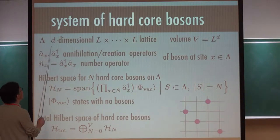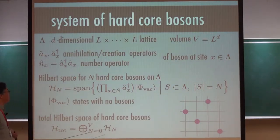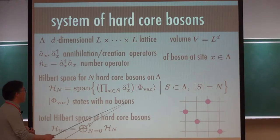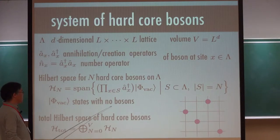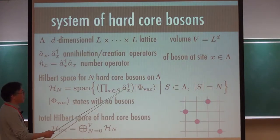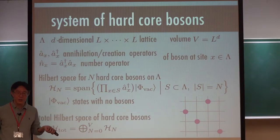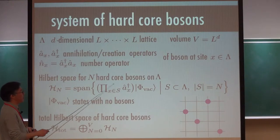I take the same lattice lambda. For each site X, I denote by a_X and a†_X the annihilation and creation operators of a boson, and n_X is the number operator. I consider the Hilbert space for N hard-core bosons on lambda. That means I start from the vacuum — no bosons — and I create bosons on a subset S of lambda with size N.